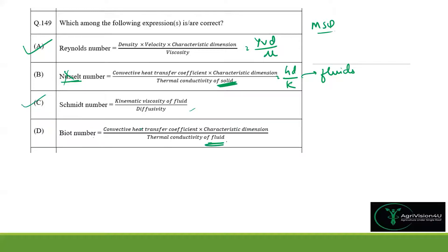Option D: Biot number is equal to convective heat transfer coefficient multiplied by characteristic dimension divided by thermal conductivity of fluid. However, in the case of Biot number, we talk about solids, not fluids — so the thermal conductivity referenced should be that of the solid. Hence this option is also wrong. Only options A and C — Reynolds number and Schmidt number expressions — are correct for this question.